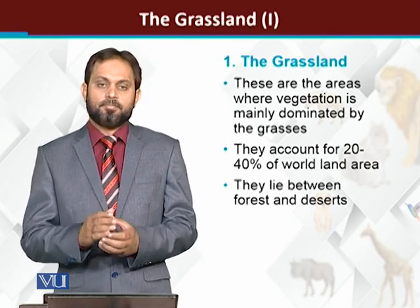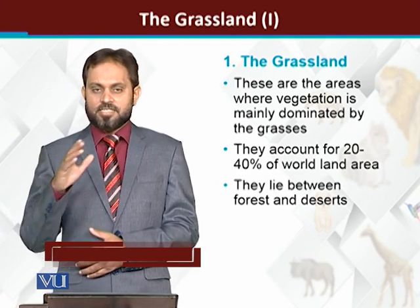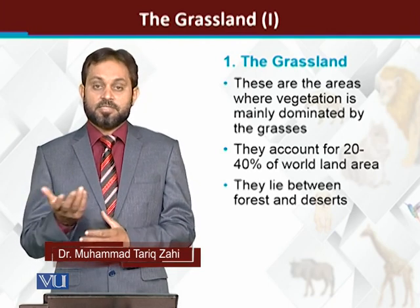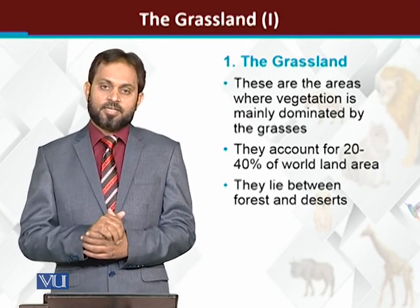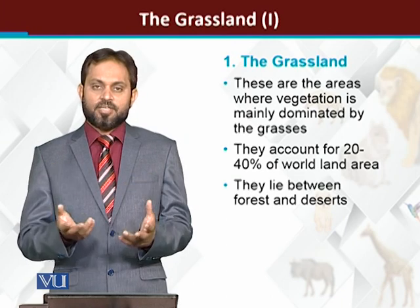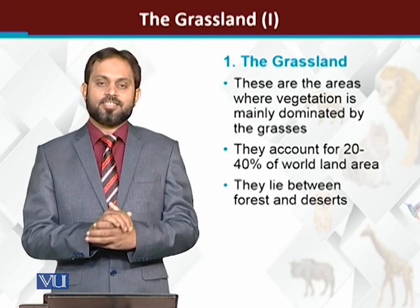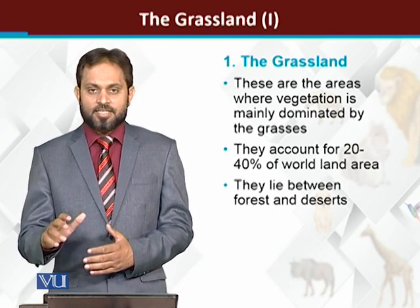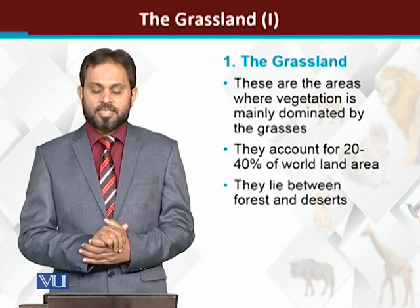Grasslands are biomes or systems — patches of land where mainly grasses are dominating. یہ ایسے حصے ہیں جہاں grasses mainly dominate کر رہی ہوتی ہیں۔ We have different types of biomes: conifer forests جہاں conifer یعنی بھاری trees dominant ہوتے ہیں، deciduous forests جہاں broad-leaved plants dominant ہوتے ہیں۔ اسی طرح grasslands ایسی biomes ہیں جن کے اندر different types of grasses dominant کریں گے — trees dominant نہیں کریں گے، بلکہ main dominating plants are the grasses.